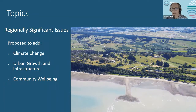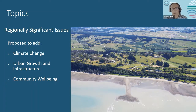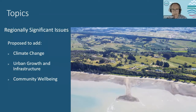The first topic in the main discussion document is regionally significant issues — issues that would normally be found in our Regional Policy Statement. The RPS will be combined into the Tasman Environment Plan, so part of the job is identifying what our regionally significant issues are. We have a list already, and the new ones proposed to be added are climate change, urban growth and infrastructure, and community well-being. In the discussion document there's more commentary about these, as well as a list of our current regionally significant issues.